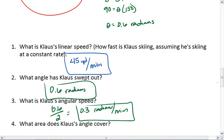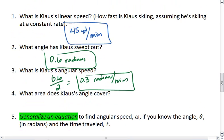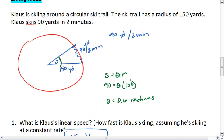What area does Klaus's angle cover? That means we're looking for this yellow shaded part. Well, we could find the area of the entire circle. The area of the entire circle we find with pi r squared, so pi times 150 squared.